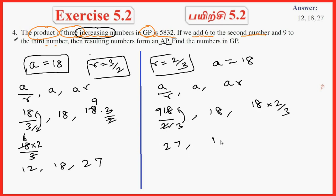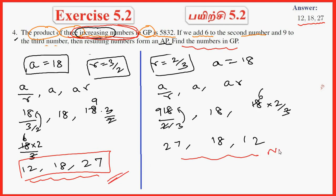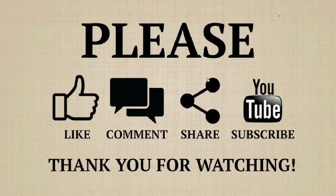So the answer is 6, 12 — wait, we have two answers. Since the problem states increasing numbers, the valid answer is 12, 18, and 27. The other result is decreasing and not valid. So the numbers in GP are 12, 18, and 27. Thank you.